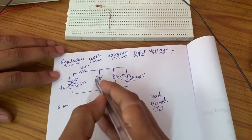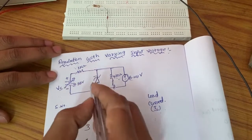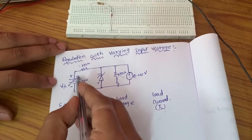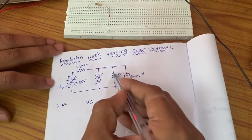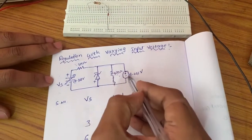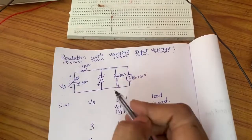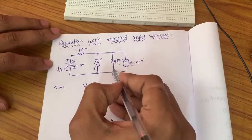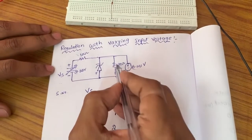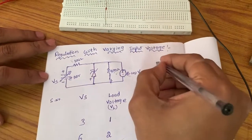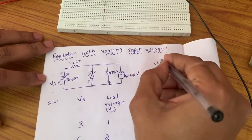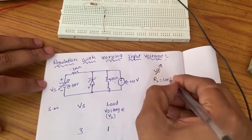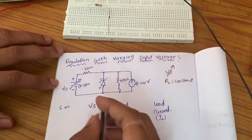In this line regulation circuit diagram, the zener diode is connected in reverse bias because the zener diode acts as a voltage regulator in reverse bias only. This is the supply voltage, this is the one kilo ohm resistor, this is the fixed resistor 470 ohms, and this is the voltmeter used to measure the load voltage. Here the input voltage is variable and the load resistance is fixed.